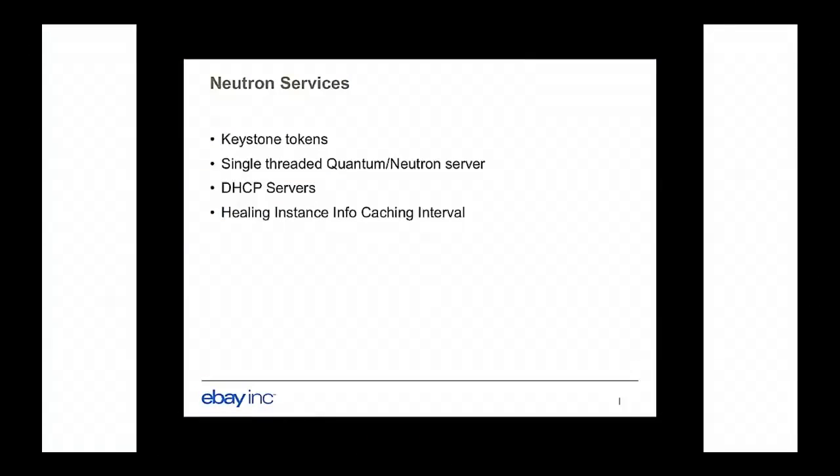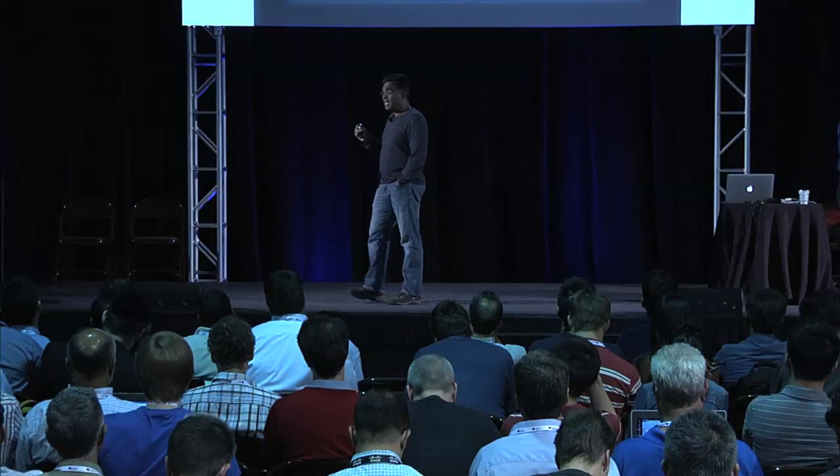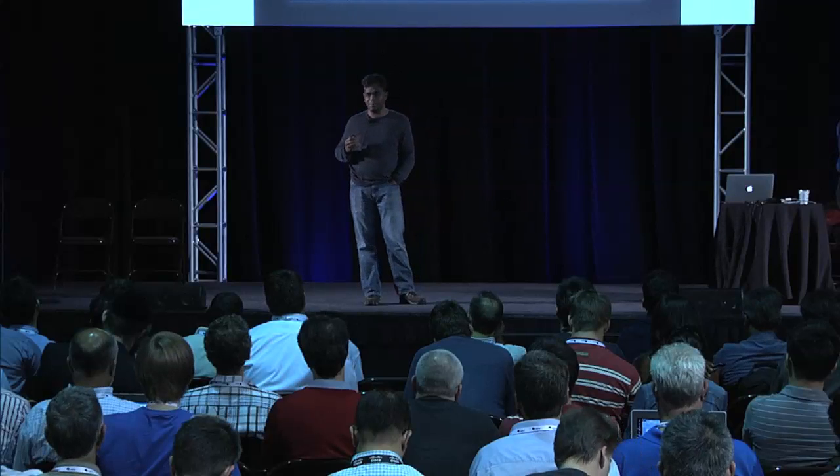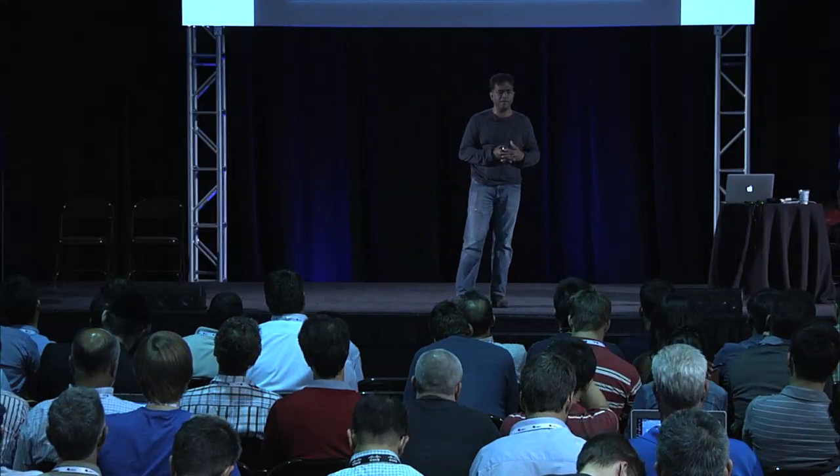Our gateway nodes are all done in a scale-out fashion. Some of the other issues we ran into are on the Neutron services side: issues with Keystone tokens, the problem of running with the single-threaded quantum/Neutron server. Prior to Grizzly and Havana, Neutron used to be called Quantum. Quantum was running within a single thread, so RPC calls and RESTful API calls were all being handled by one thread, causing problems at large scale. We also had issues with DHCP servers.